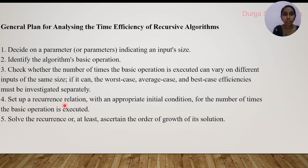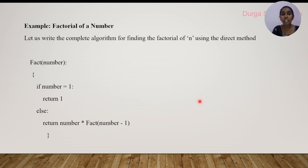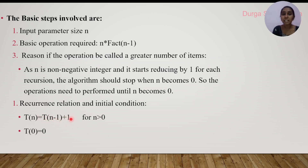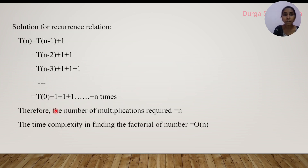Step 4: set up the recurrence relation with the initial condition. The recurrence relation is T(n) = T(n − 1) + 1, with initial value T(1) = 1.